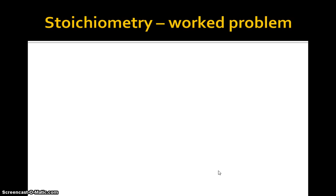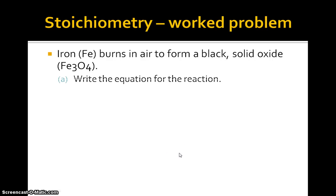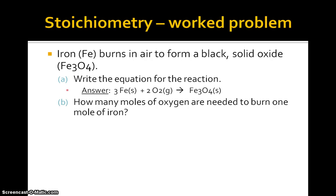Iron (Fe) burns in air to form a black solid oxide Fe3O4. (a) Write the equation for the reaction, and so that becomes 3Fe(s) + 2O2(g) → Fe3O4(s). (b) How many moles of oxygen are needed to burn one mole of iron? As you can see here, you can get your stoichiometric ratio from considering the stoichiometric coefficients on the iron and the oxygen respectively, and you get 2/3 moles of O2.